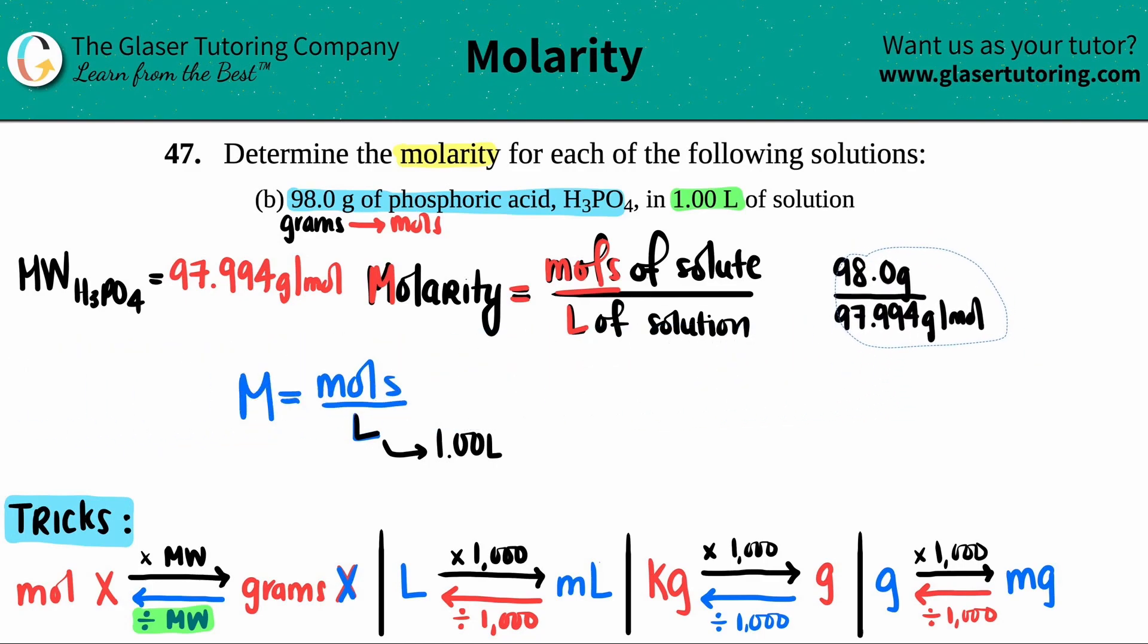Now 98 divided by roughly 98—it looks like they're showing us that we have roughly one mole. Yeah, so I'm just gonna say one mole of H3PO4.